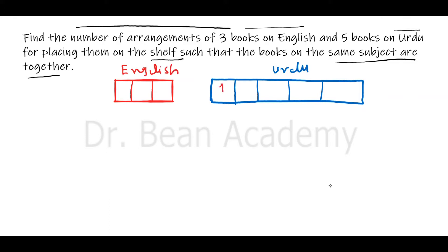The books are different within each subject. For example, this is the first book, second, third, fourth, fifth Urdu book, and here is the first, second, and third English book. Within each category the books are different but the subject is the same. Now they want us to find the arrangements when the books on the same subject should be together.